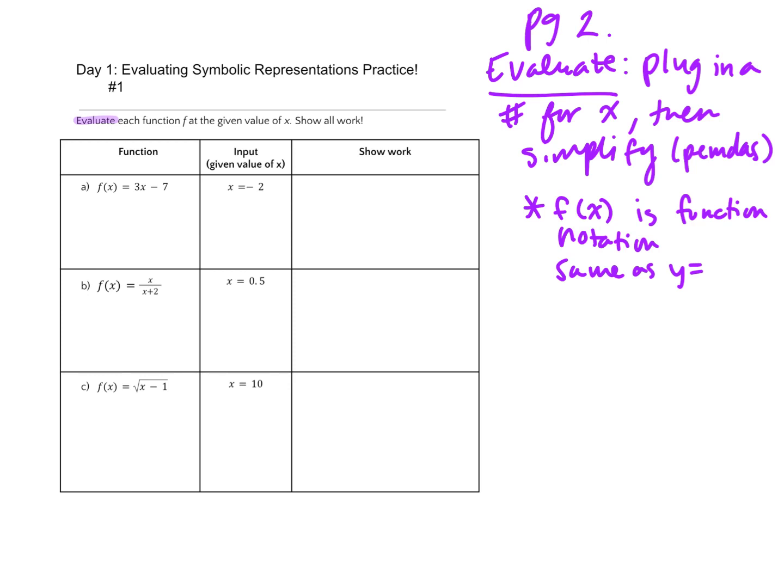So we're given an input, and it's sort of like our vending machine where we have an input and we're gonna find the output. Our input for part a is negative 2, so x equals negative 2. I have a linear function, so I'm gonna input x where I see x.